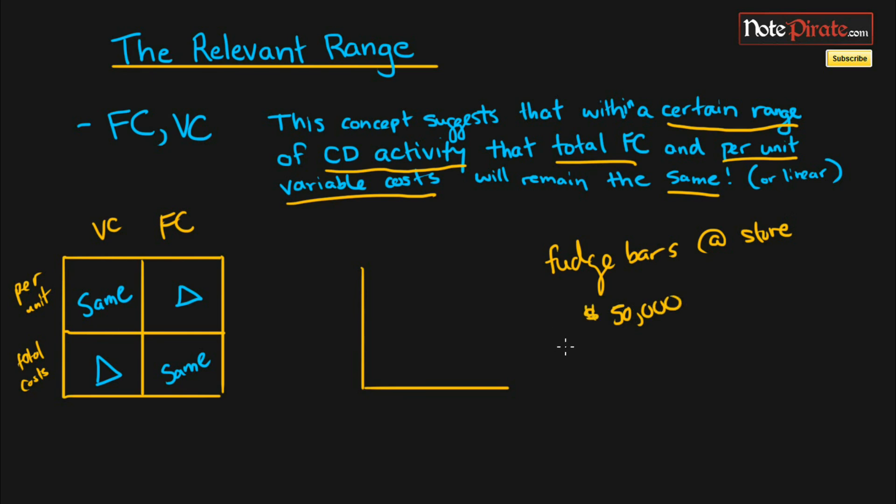So let's just say that this fixed cost is yearly and we'll put cost driver activity along the x-axis and costs on the y-axis and let's say we have a certain amount of unit activity of 20,000 bars being sold and 80,000. So within this range of cost driver activity our total fixed costs are $50,000.